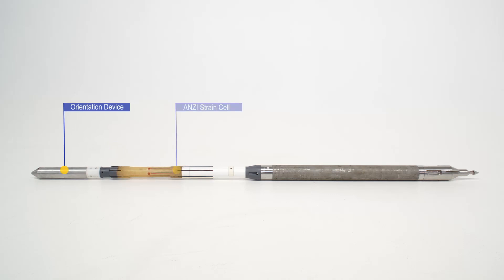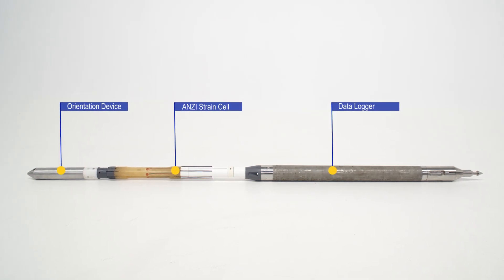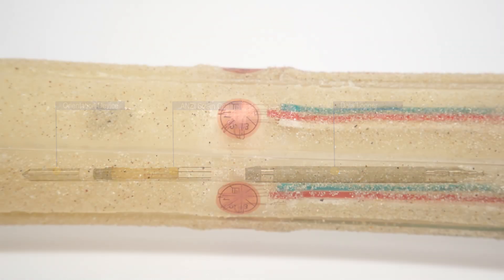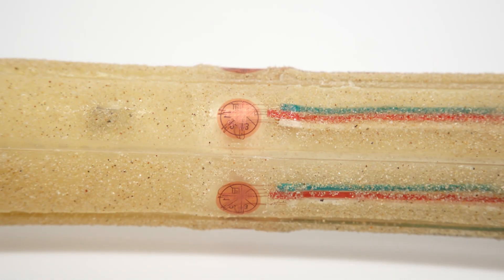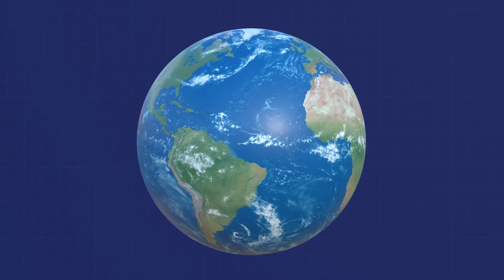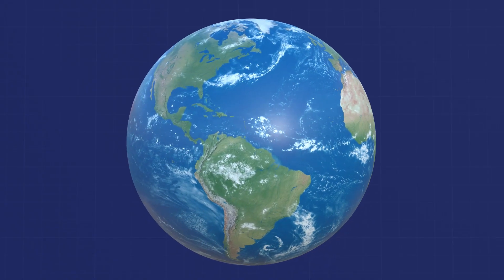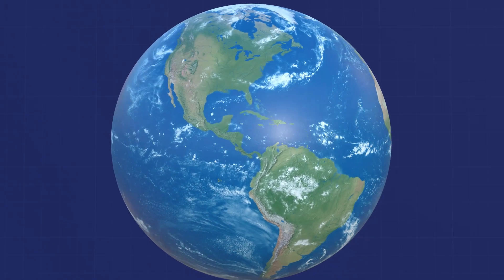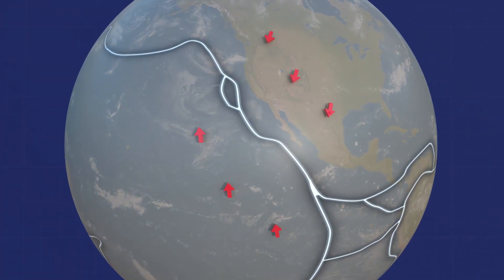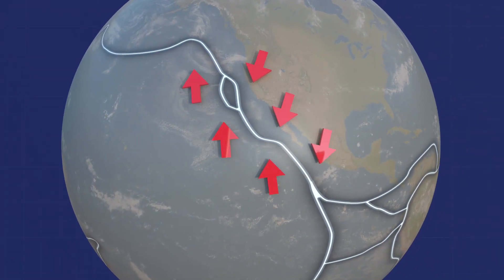A high-precision data logger affixed to the back of the ANSI cell records temperatures, fluid pressure, and rock strain on 18 electrical resistance strain gauges every few seconds. Stress or pressures in the Earth's crust is generated by the weight of overlying rock and the movement of tectonic plates.